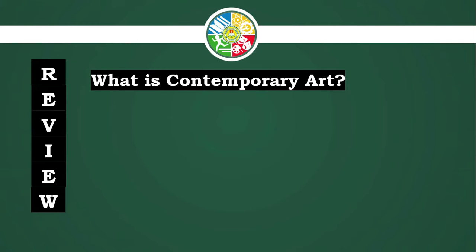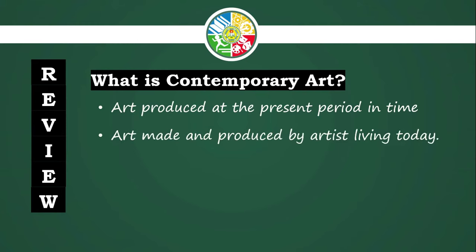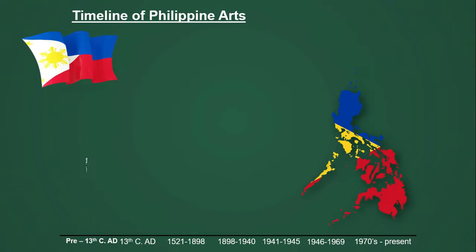I believe that you already have your answer. Let us check the definition. As you can see on screen, contemporary art does not actually focus on the definition of art itself, but it refers to a timeline — a certain time or year wherein an art is made. Contemporary art refers to those artworks made in the present time. In this lesson, we'll be talking about the different Philippine art eras, or what we call Philippine art history.